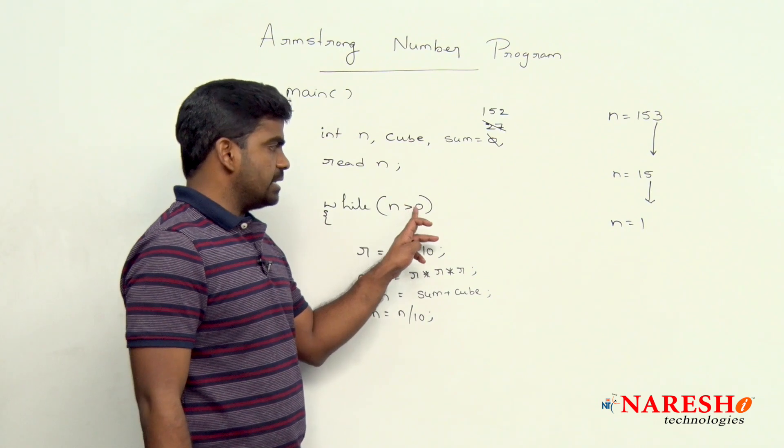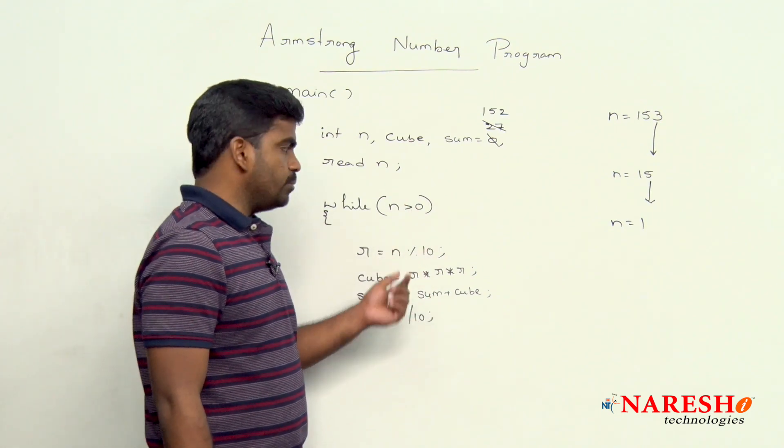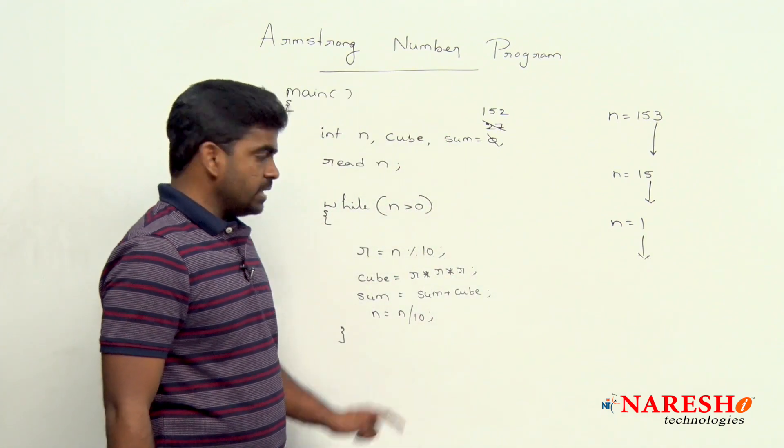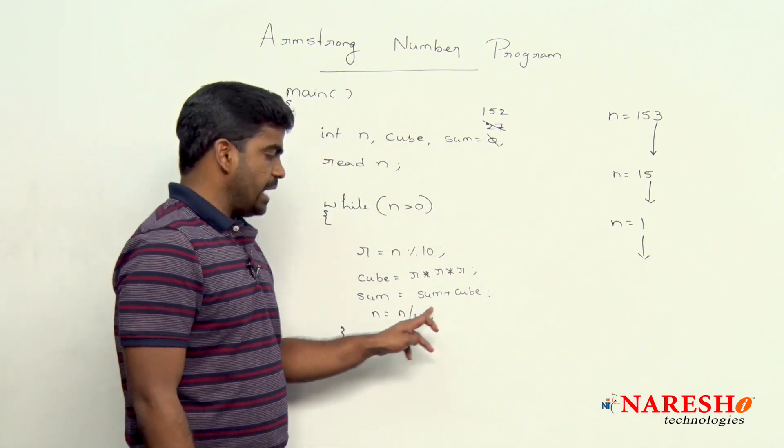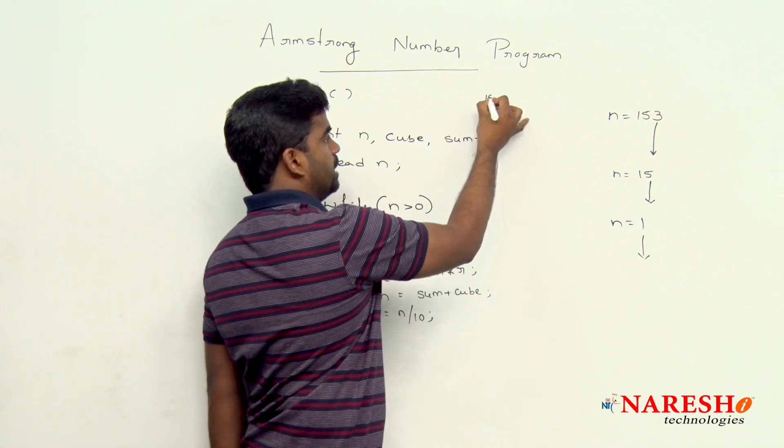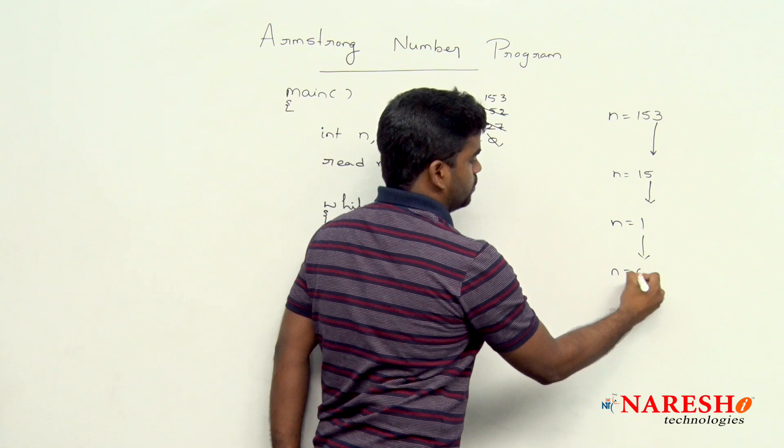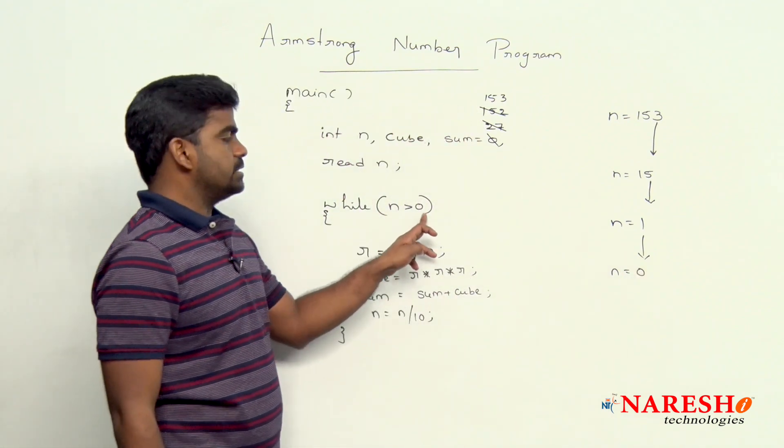1 is greater than 0, condition true, come inside. N mod 10, it is not divisible, it will give that remainder 1. 1 cube is 1 only, that will be added to sum. Sum value become 153. And next, whenever n value become 0, 0 is greater than 0 should stop.